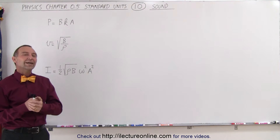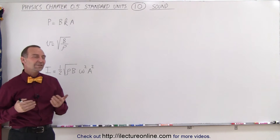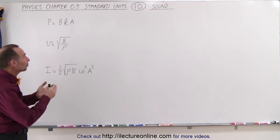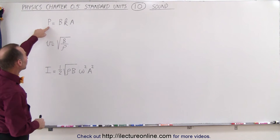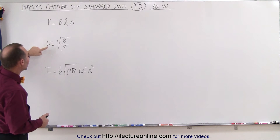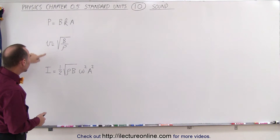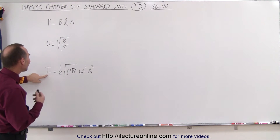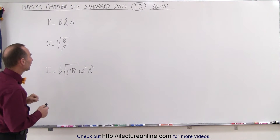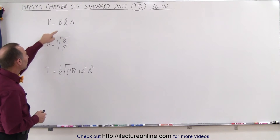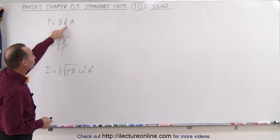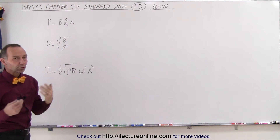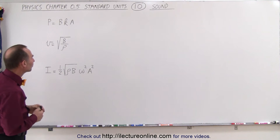Welcome to ElectroOnline. Here we're going to talk about equations relating to sound: the pressure of a pressure wave or a sound wave, the velocity of a wave in air, and the intensity of a sound wave. B is the bulk modulus, K is the wave number, and A is the amplitude of the oscillations of the wave.